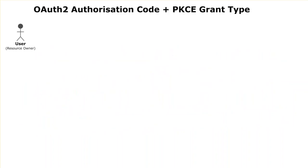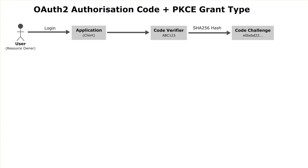Now I'm going to illustrate the process of the OAuth 2 authorization code plus PKCE grant type. We start with a user, normally referred to as a resource owner, who wants to log into your application, typically referred to as a client in the world of OAuth. That application then generates a random string which is referred to as the code verifier. Once they have this code verifier, they then generate a SHA-256 hash of the string which is referred to as the code challenge.